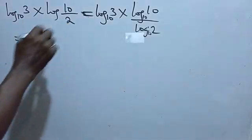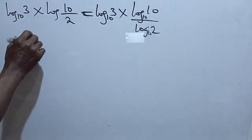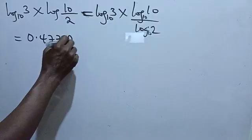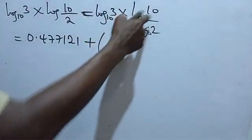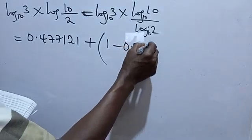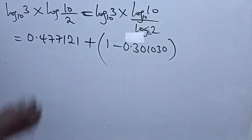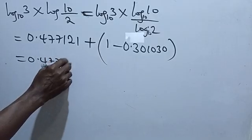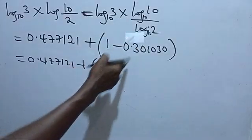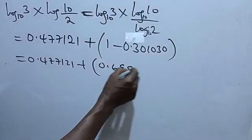Now substituting values: log 3 base 10 is given as 0.477121. Log 10 base 10 is naturally 1. Log 2 base 10 is given as 0.301030. So we have 0.477121 plus 1 minus 0.301030. Now remember the division by 1 means we subtract 1, applying the division law of logarithm.